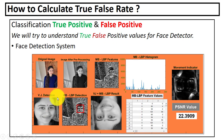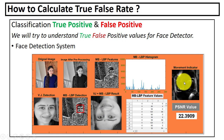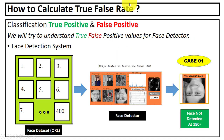Here, face is detected using VJ face detector and using MBLBP. You can see the image is rotated 180 degrees and the face is detected. Here you can see the image movement — this is the original image, you can see the eyes, and you can see the image after rotation. This is the PSNR value.